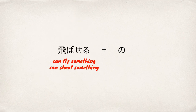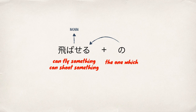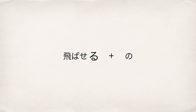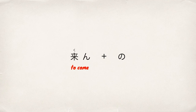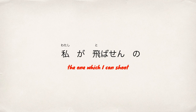飛ばせんの is a combination of the verb 飛ばせる, meaning 'can fly something' or 'can shoot something,' and the particle の, which makes what comes before into a noun, translating to 'the one which.' In very informal speech, when a verb ending in る is followed by の, る often becomes ん, as it's easier and faster to pronounce. For example: するの becomes すんの、たべるの becomes たべんの、くるの becomes くんの、and so on.